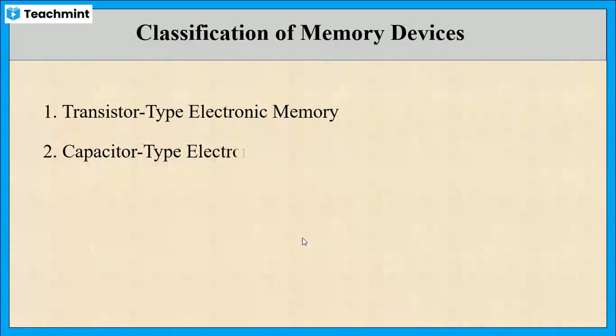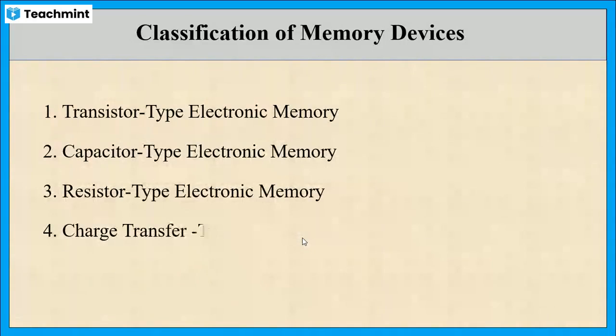The memory devices can also be classified into four categories based on what it is made up of. They are transistor type electronic memory, capacitor type electronic memory, resistor type electronic memory, and charge transfer type electronic memory.